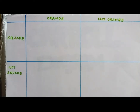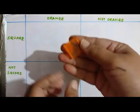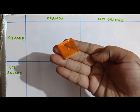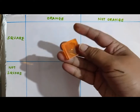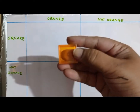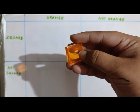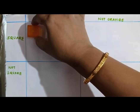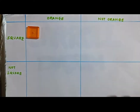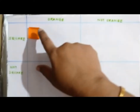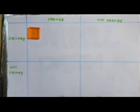And in this, we are going to place some shapes. Let us take the first shape. This shape is orange in color and it is a square, so I am going to place it here. It is orange and it is square.